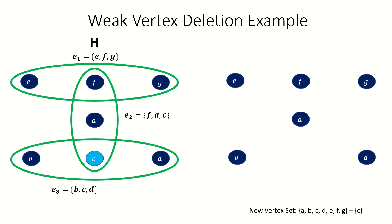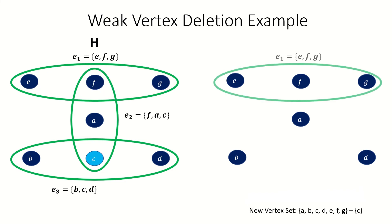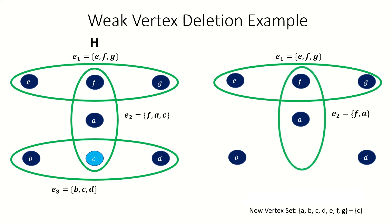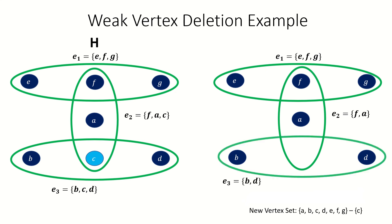Next, find our new edge set based on the original edge set. E sub 1 does not contain vertex c, so we remove it and add the new e sub 2 to our hypergraph. Finally, e sub 3 also contains vertex c, so remove it and add the new e sub 3 to our hypergraph. This is the resulting hypergraph H minus c.